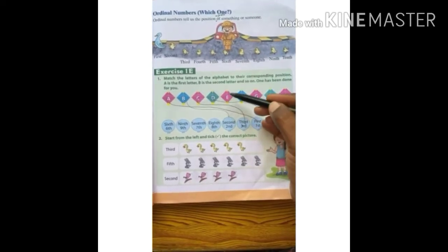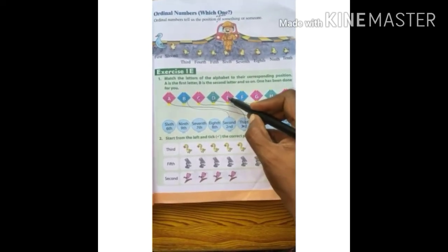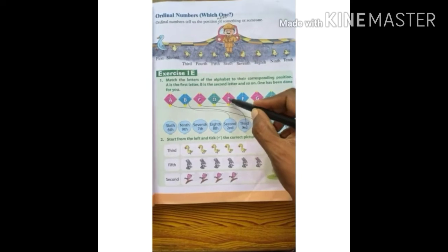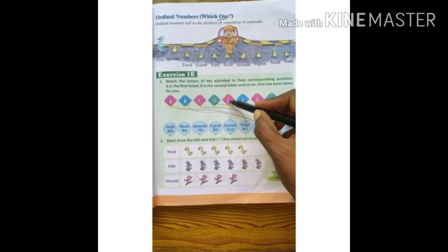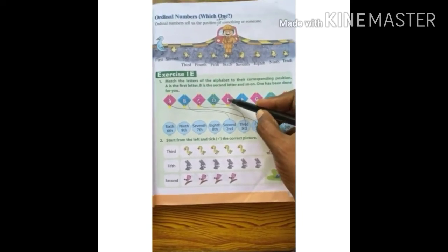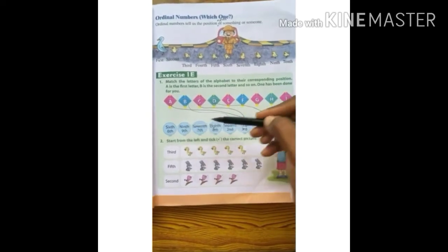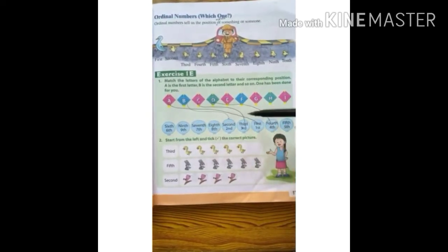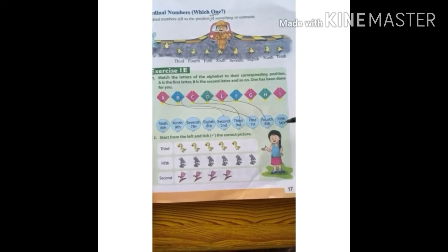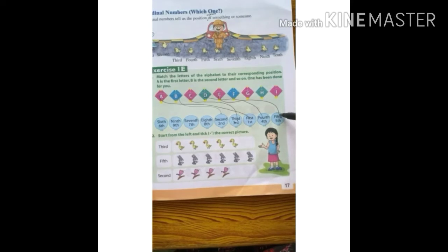Now E. We will draw a line from letter E to its position. E is the 5th position. Looking through the options — 6th, 7th, 9th, 8th, 2nd, 3rd — this is the last: 5th. So from letter E, we will draw a line to the 5th position.